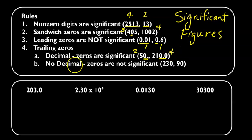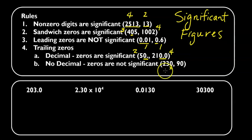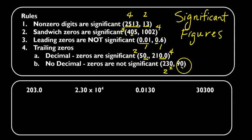If there is no decimal and you have trailing zeros, the zeros are not significant. So 230 — this zero right here is not significant because there's no decimal and it is a trailing zero, so this only has two significant figures. 90 — the zero at the end is a trailing zero and there's no decimal, so that's not significant, and this will only have one significant figure.